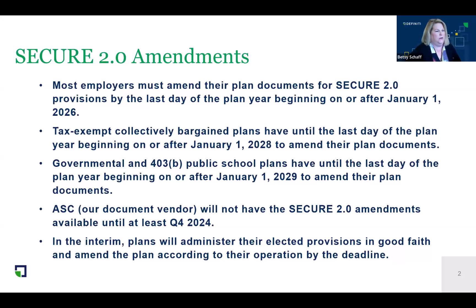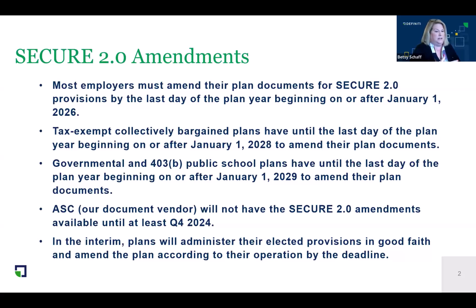We use an outside vendor to prepare our documents called ASC. They will not have our SECURE 2.0 amendments ready until at least the fourth quarter of this year, so that's why we're not getting a jump on those — we need to make sure we've got the approved language. In the interim, we will be administering your plans by the elections and defaults that DFINITY has selected, as well as any overrides that you may want to select.